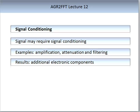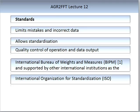You need to understand whether signal conditioning is a requirement of your sensor, and if so be mindful of this in terms of installation, operation, calibration, and function. Ideally all sensors, particularly those on the commercial market, would adhere to a set of standards. Standards are important as they limit mistakes and incorrect data, allow standardization between sensors made by different companies, and enable quality control of operation and data output. The two main standard bodies are the International Bureau of Weights and Measurements (BIPM) and the International Organization for Standardization (ISO).